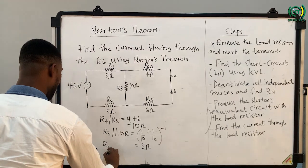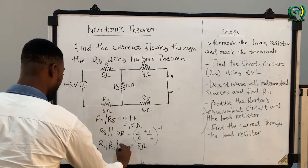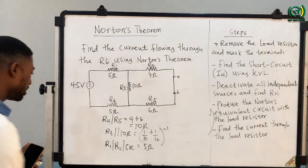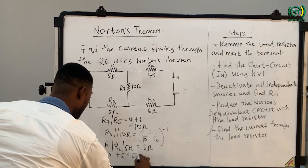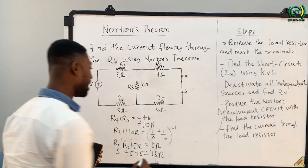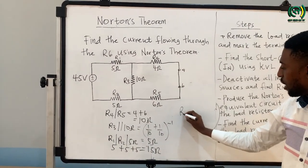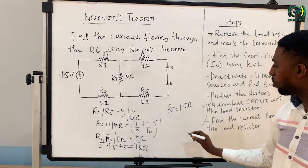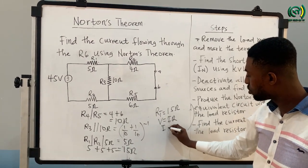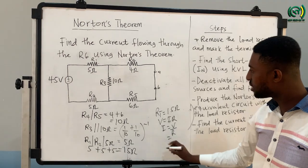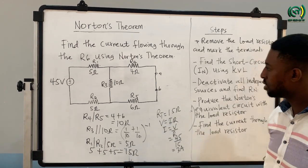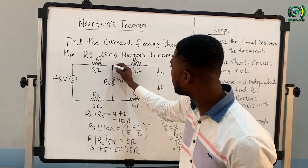The 5 ohm equivalent is in series with R1 and R2. R1 and R2 each have a resistance of 5 ohms, so 5 plus 5 plus 5 gives us 15 ohms total. The total resistance RT equals 15 ohms. From Ohm's law, V equals IR, so I equals V over R. The voltage source is 45 V, so 45 over 15 gives us 3 amps. This means the voltage source drives a current of 3 amps through the circuit.